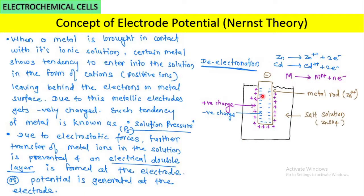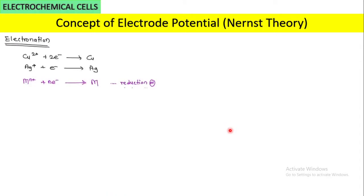The potential generated here is because of the de-electronation or oxidation reaction. The electrical double layer formed due to this oxidation reaction is called the oxidation potential.